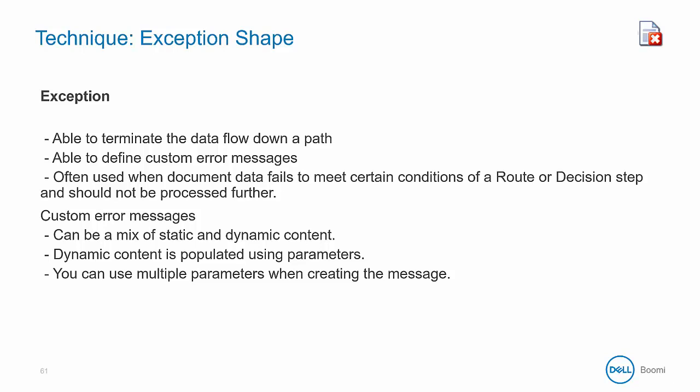Another technique is to use an exception shape. It will terminate the data flow down a path and allows you to define custom error messages that will show up in the process reporting view and in email alerts. It is often used with the route or decision step when a document does not meet specific criteria. The custom error message in the exception shape can be a mixture of static and/or dynamic content, allowing you to produce helpful error messaging by capturing relevant data like a business ID or name. This dynamic content is populated using parameters, which can be data elements from the document, the system date/time, static values, or even results from a query.